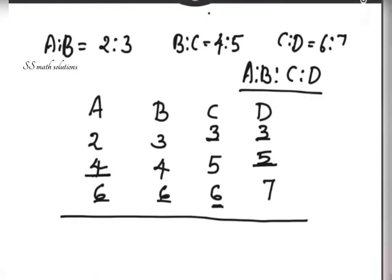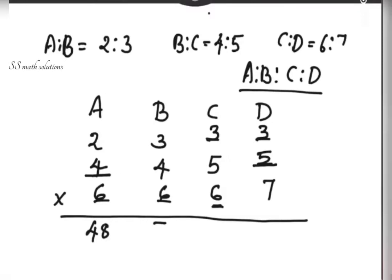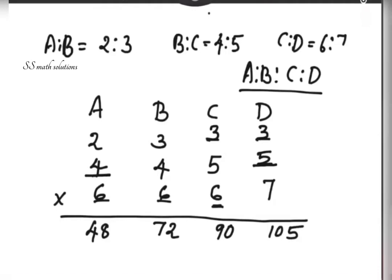Now filling is done and we need to multiply. 2 into 4 is 8, 8 into 6 is 48. 3 into 4 is 12, 12 into 6 is 72. 3 into 5 is 15, 15 into 6 is 90. 3 into 5 is 15, 15 into 7 is 105.